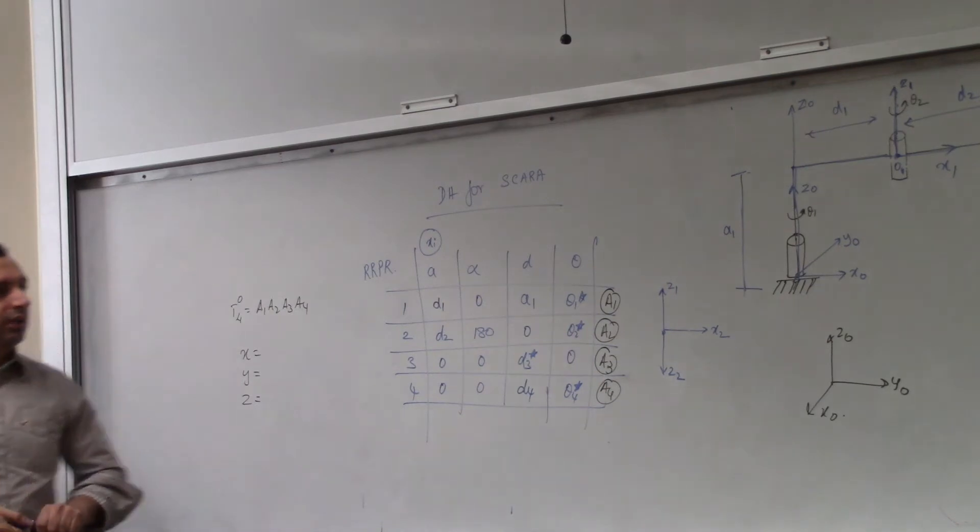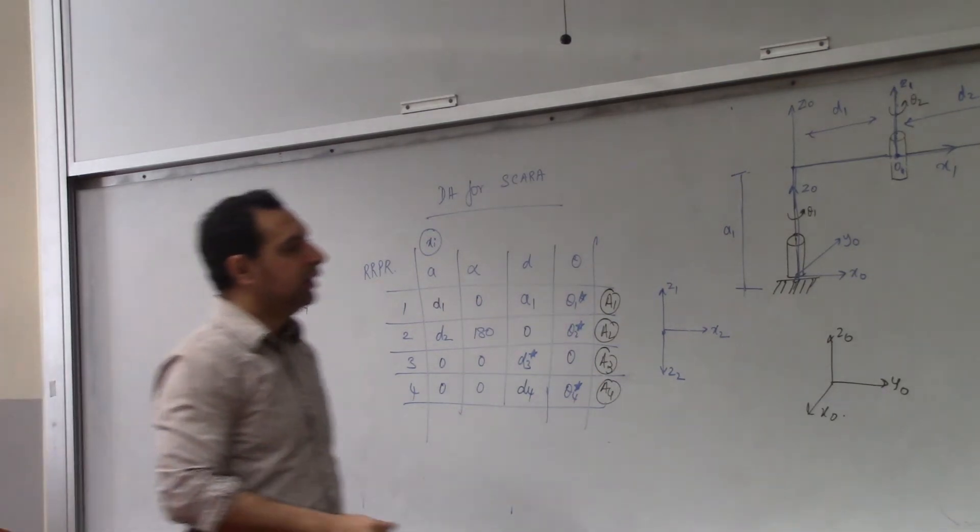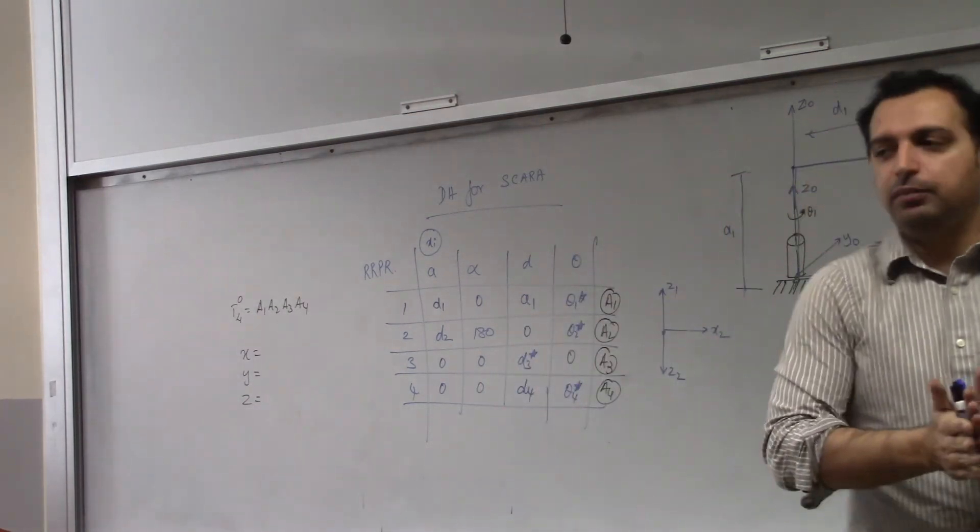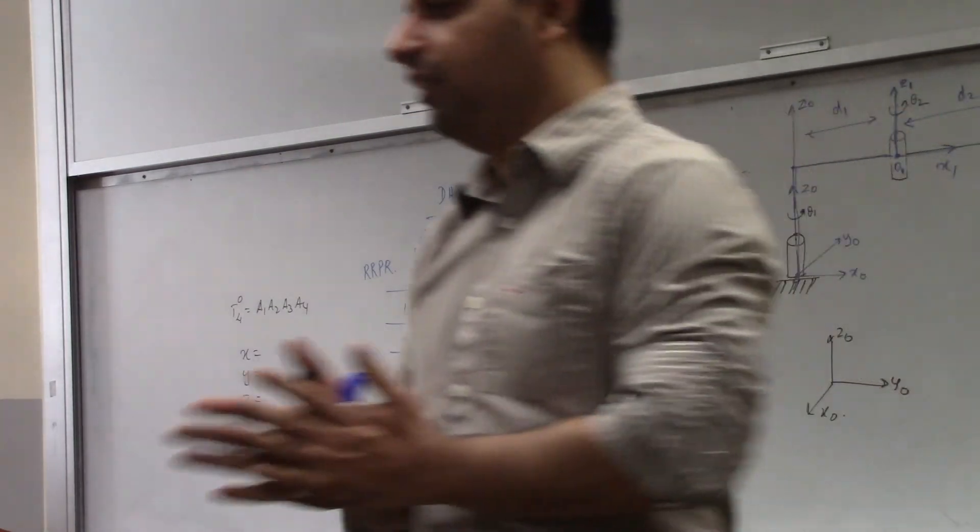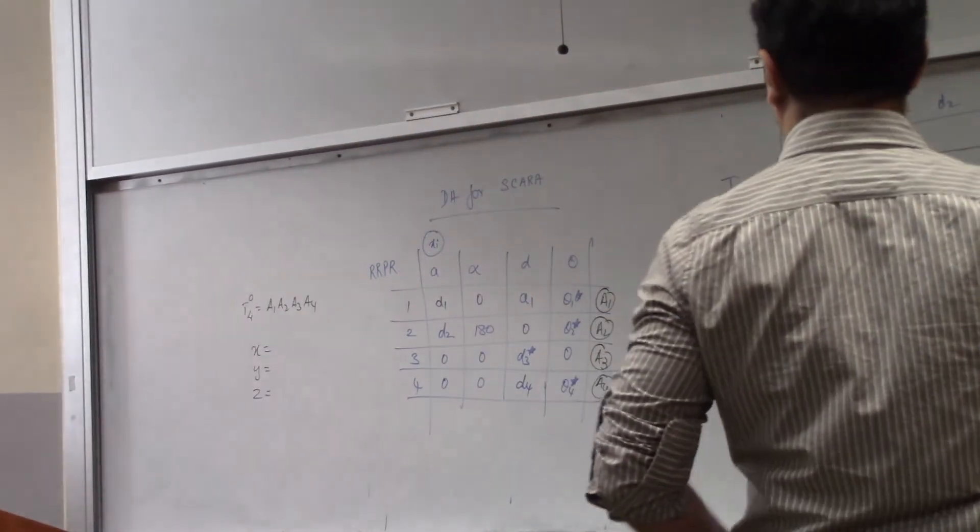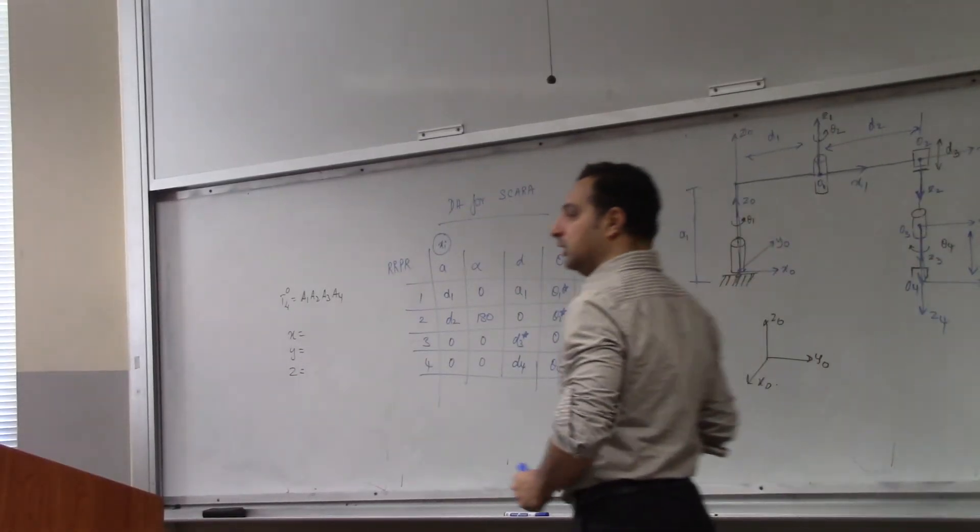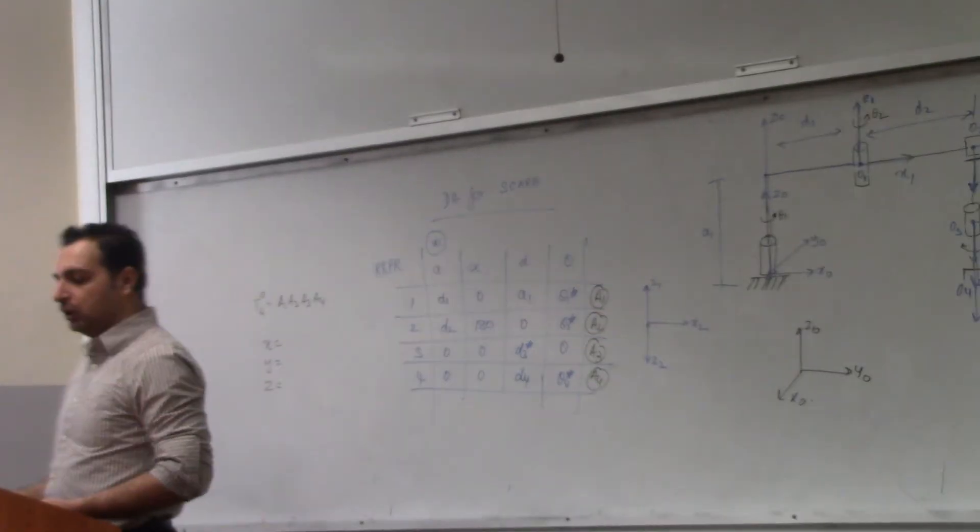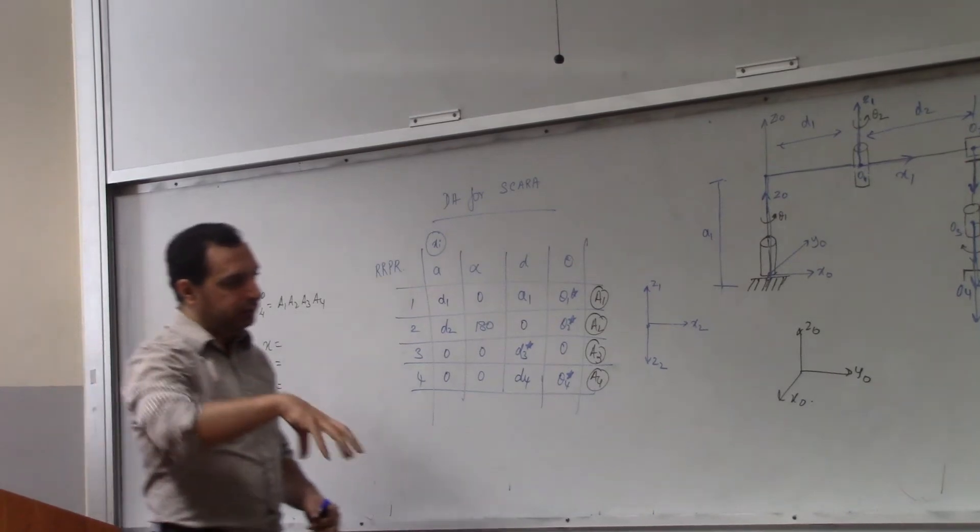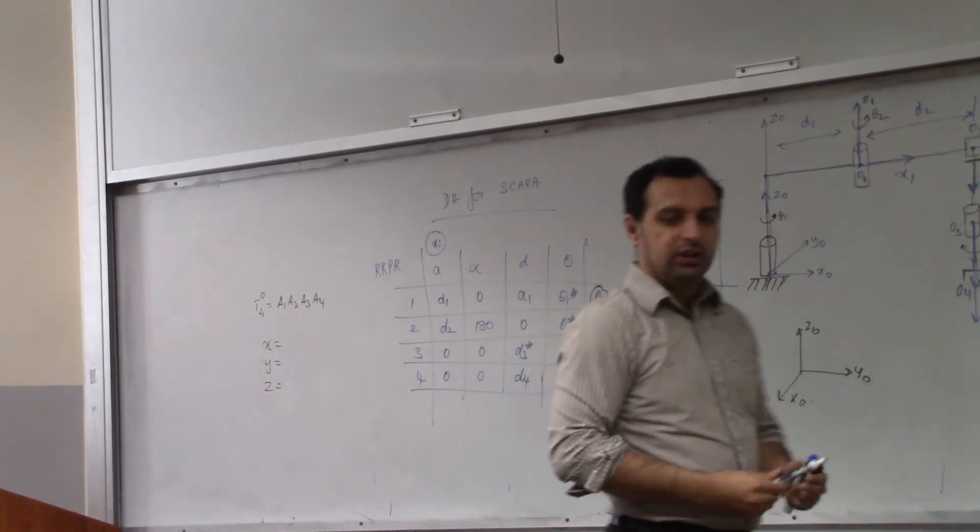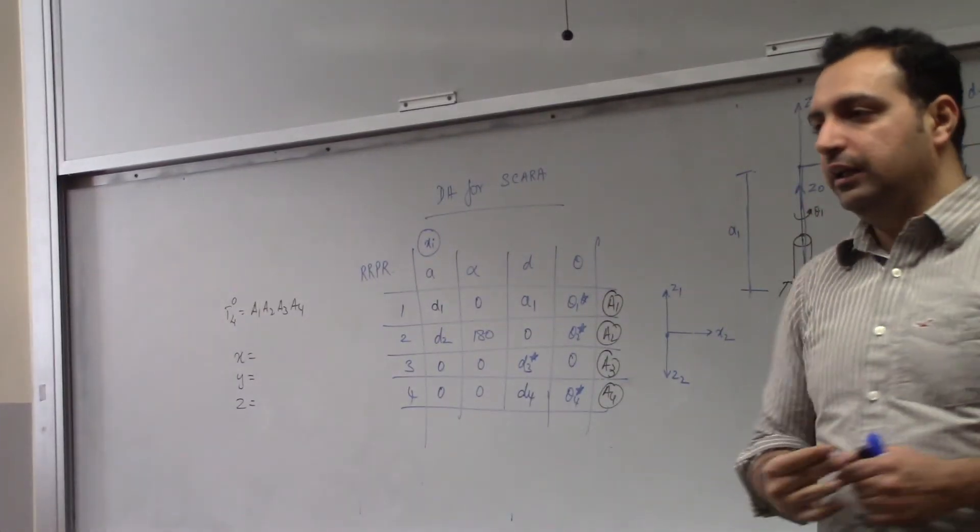So next class, we will talk about a wrist, how to operate a wrist, what is a spherical wrist. But you need to be very familiar with this so we can go to a six degree of freedom manipulator. Till now we are only talking about position, but now we will include an orientation so you can rotate and approach any point in 3D space comfortably with any desired orientation.